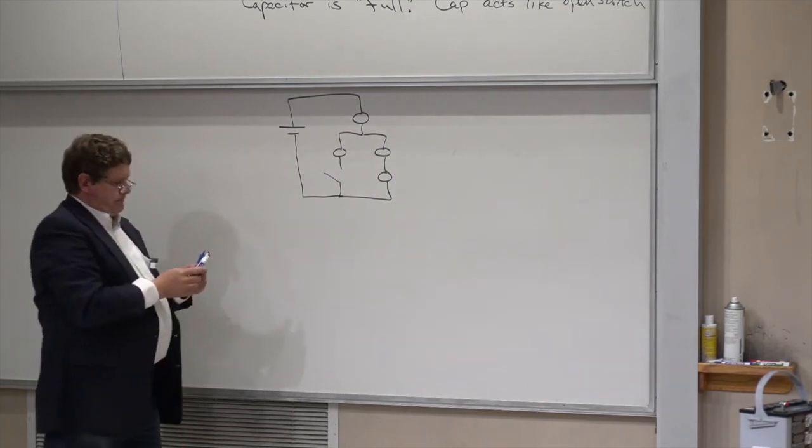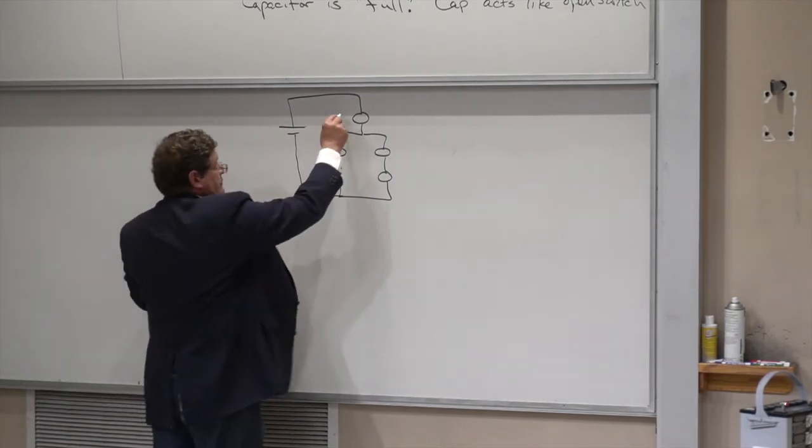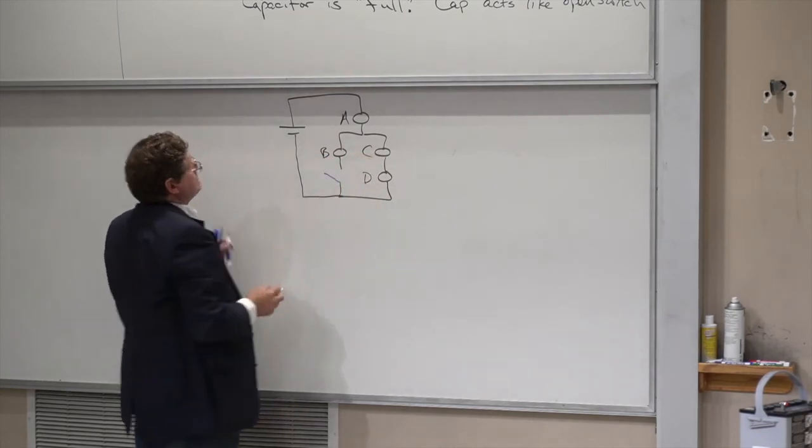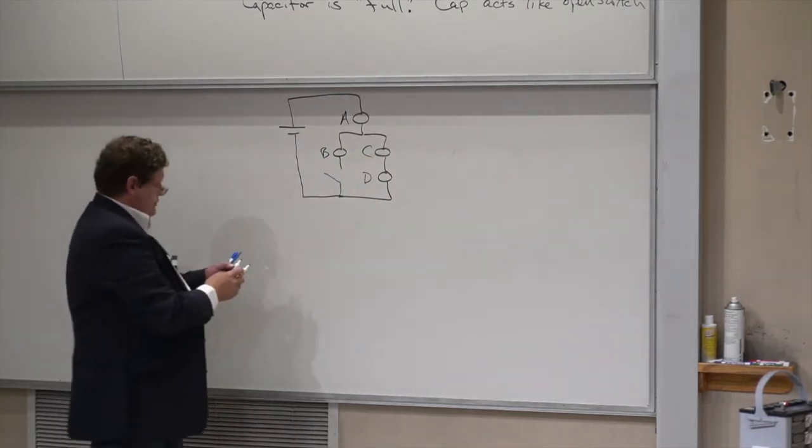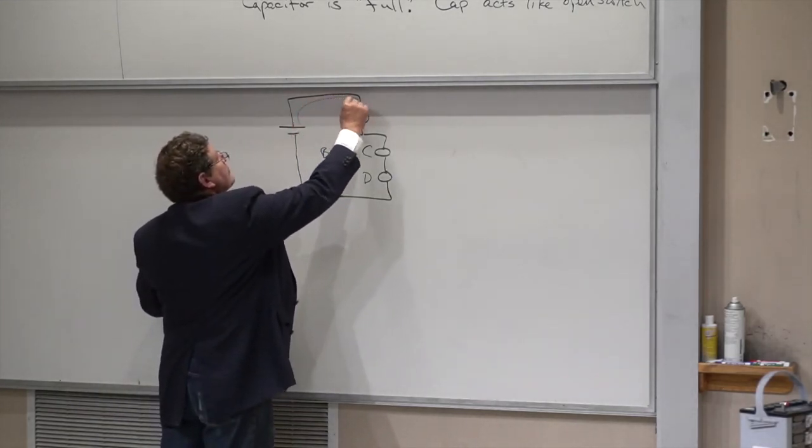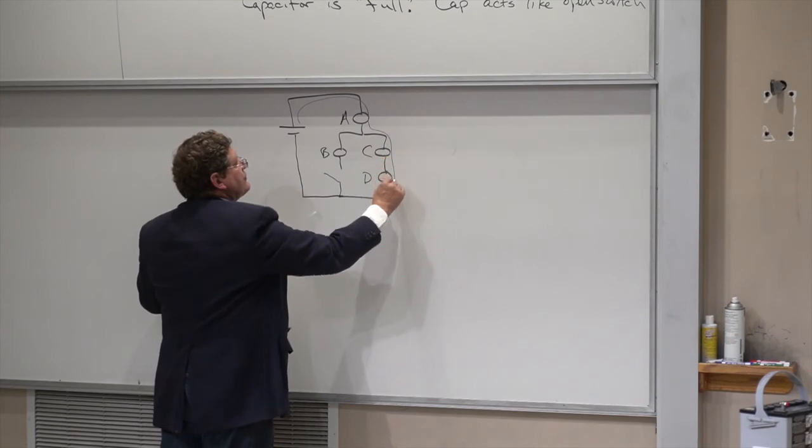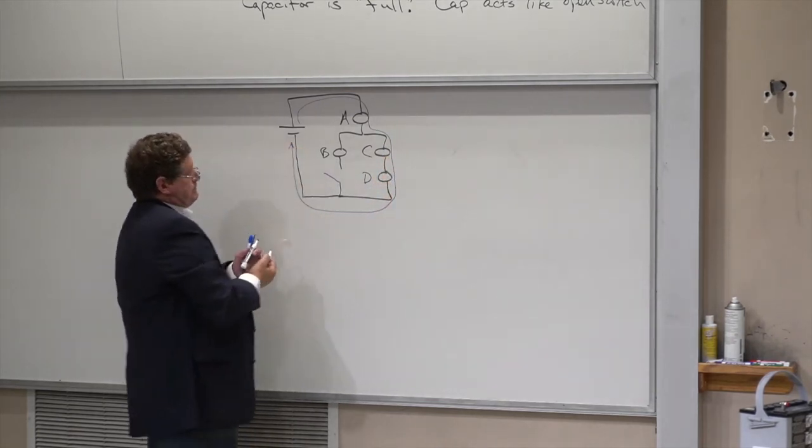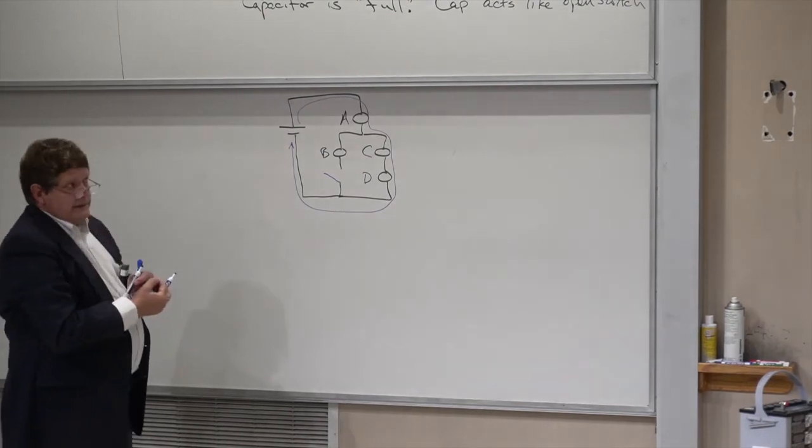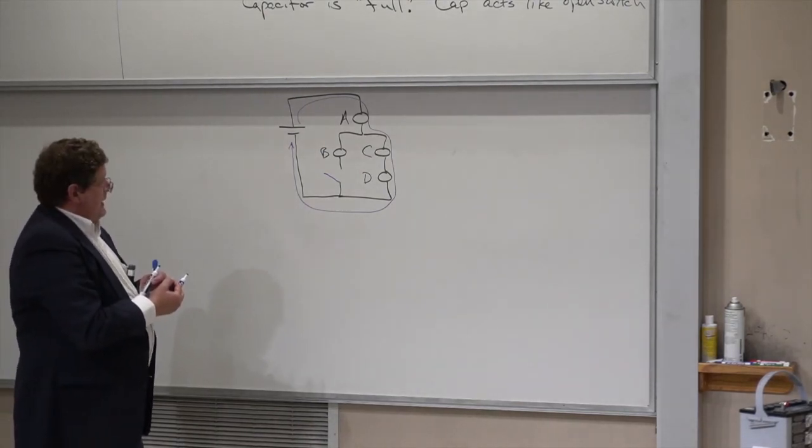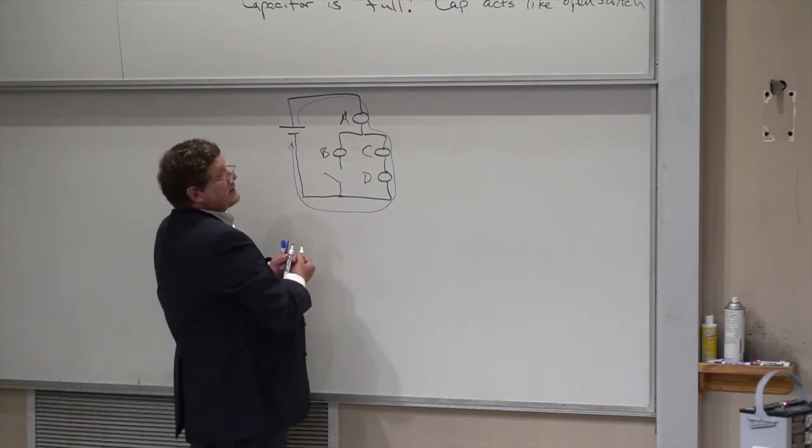And remember, this is bulb A and B and C and D. Now, if that's an open switch, that means that all the current that goes through A has to go through C and then through D and back around. That means that A, C, and D are now in series with each other, and that means that they're all equally bright.